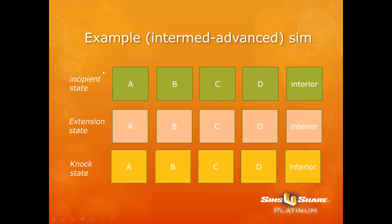For example, if you're creating your first simulation, you have A, B, C, D, and interior — five slides, and that's going to be your arrival or incipient state. If you want to create an extension state, you have to practically create another set of five slides, each showing the conditions during fire extension. Similarly for knockdown, five more slides reflecting each location under that condition. So with five physical locations and three states, you would need to develop 15 different slides.